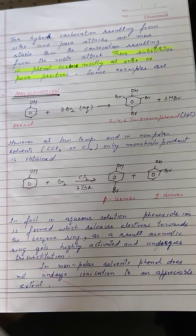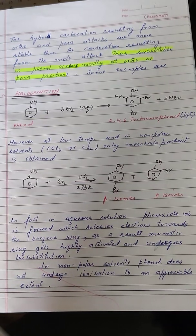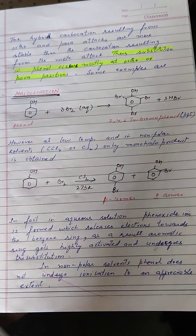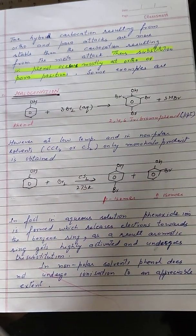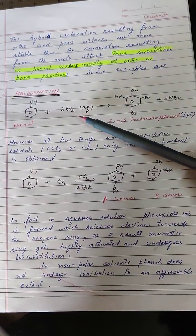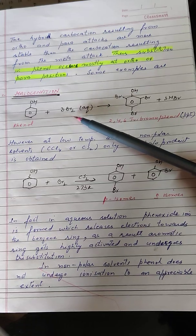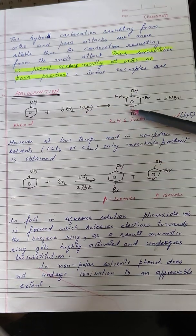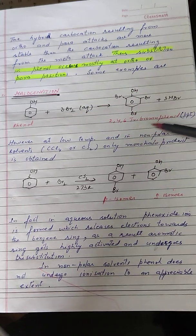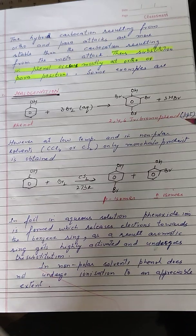Now let us take up some examples of electrophilic substitution reactions of phenol. The very first one is halogenation. Phenols on treatment with an aqueous solution of bromine result in the formation of 2,4,6-tribromophenol.